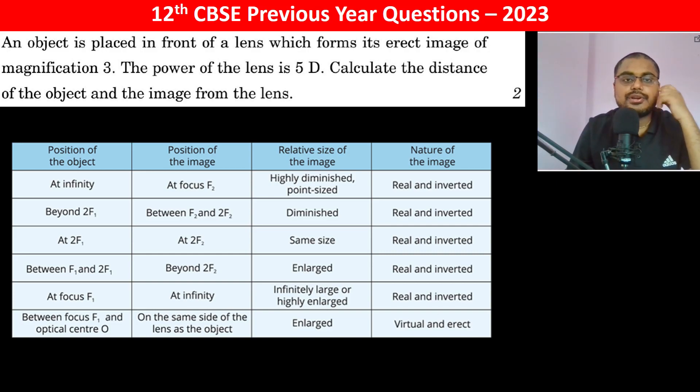An object is placed in front of a lens which forms its erect image of magnification 3. The power of the lens is 5D. Calculate the distance of the object and image from the lens.